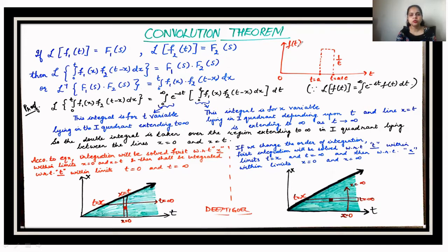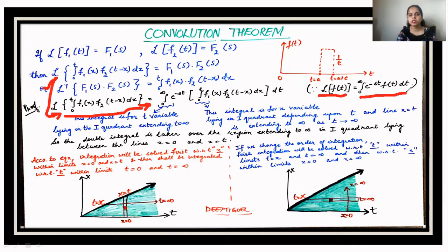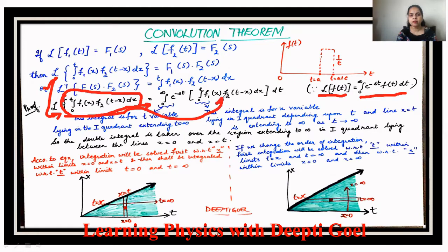Now let's discuss the proof of the convolution theorem. We start from the left-hand side of the equation and apply the Laplace transform to the function, which is the integral from 0 to t of f₁(x)·f₂(t−x) dx. Using the basic definition of the Laplace transform — L{f(t)} = integral from 0 to ∞ of e^(−st)·f(t) dt — we substitute the bracketed term as f(t).